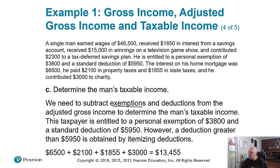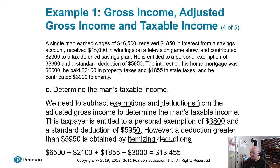Then we have exemptions and deductions. He's entitled to a $3,800 personal exemption. If you weren't single, you'd have additional exemptions for a spouse, children, and so on. There's also a standard deduction you can take to make it simpler. He can also increase deductions by itemizing — but if he doesn't have enough of certain kinds of deductions, it doesn't make sense to itemize, because he might end up with lower deductions than the standard.